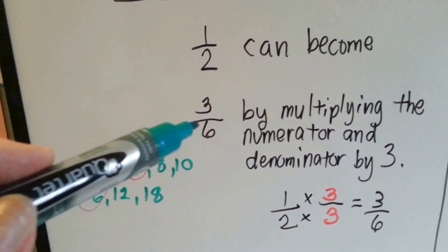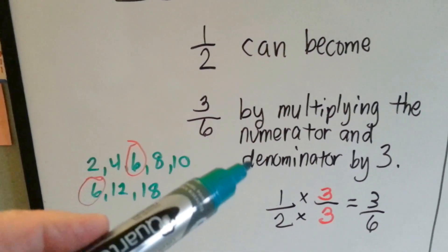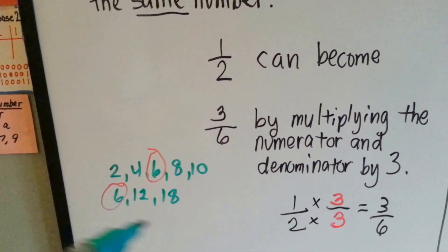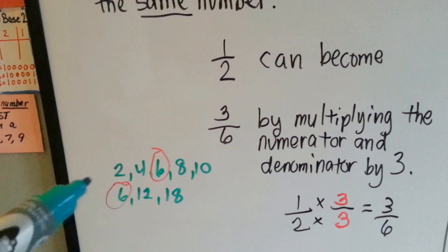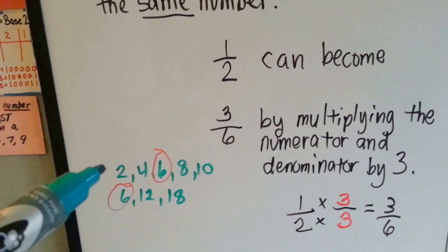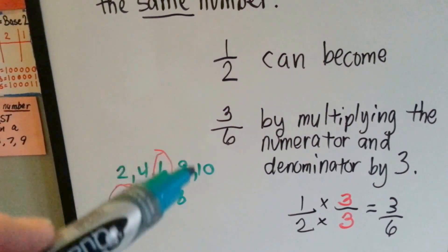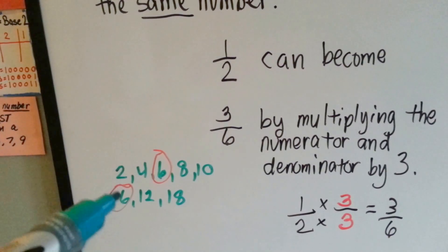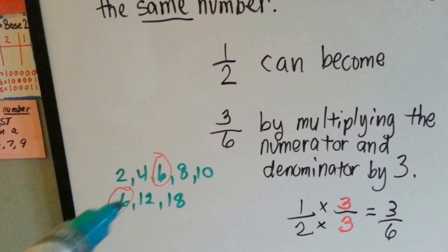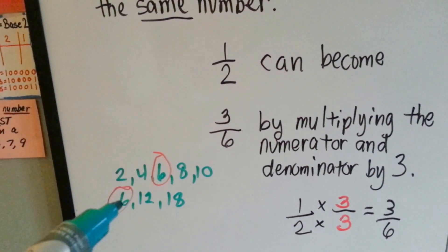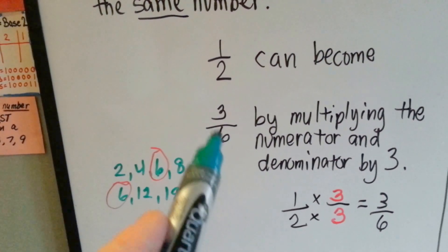1 half can become 3 sixths by multiplying the numerator and denominator by 3. We ask, what multiple do 2 and 6 have in common? The answers to them in the multiplication table are 2, 4, 6, 8, 10. And for 6, we've got 6, 12, 18. Look it, the smallest number they have in common is 6. So they're going to meet at the 6, at the 6's house.